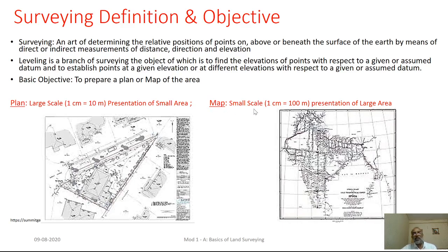Whereas, as we consider large areas, we will be adopting a scale such as 1 centimeter equal to 100 meters or more, and accordingly dealing with very large areas — for example, a map of India, whereas a plan would be of a building.